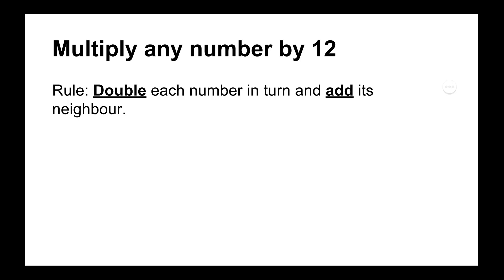So the rule for multiplying any number by 12 is very similar to the rule for multiplying by 11. This time though we double each number in turn and add its neighbour.